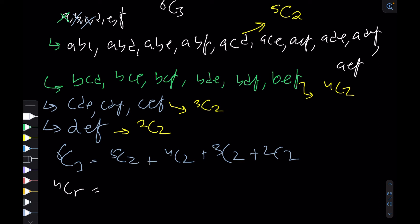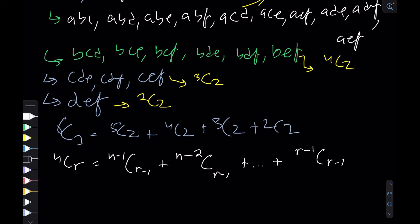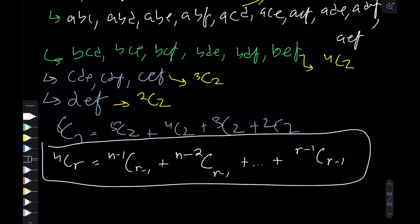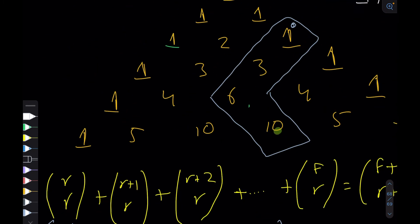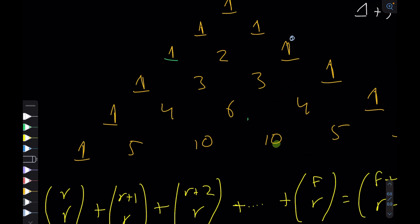Generalizing this for any nCr: first I start with combinations containing a specific element from the n minus one remaining, choosing r minus one. Then I eliminate that element and focus on the next, leaving n minus two elements from which I choose r minus one. This logic continues until I reach r−1 choose r−1, which equals 1, and that's where I stop — proving the hockey stick identity.